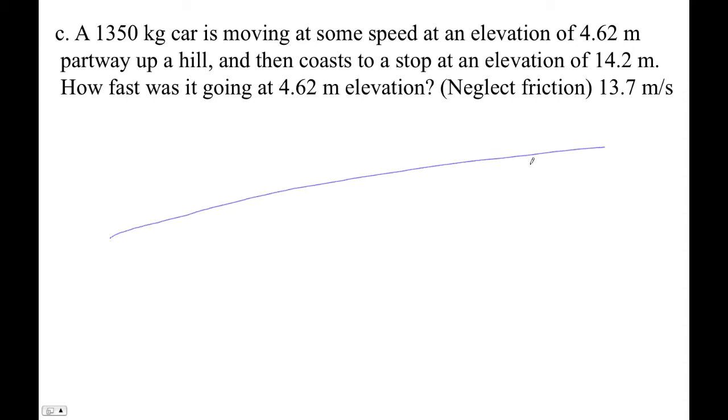Okay, let's draw the hill. So here it is - it's at an elevation at some speed, right? So here it's moving at some speed at an elevation of 4.62 meters, but then it coasts to a halt at an elevation of 14.2 meters. The velocity is zero, right? So how fast is it going here?